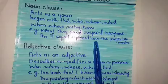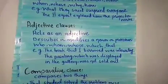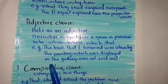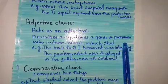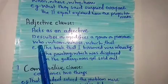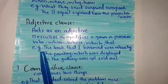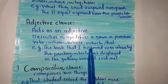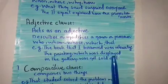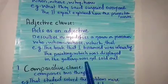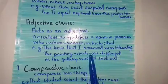Then we have the adjective clause. It acts as an adjective — it describes or modifies a noun or pronoun. An adjective clause includes the words: who, when, whose, which, and that. For example: 'The book that I borrowed was interesting.' And: 'The painting which was displayed in the gallery was not sold.' So 'that' and 'which' here are our adjective clauses because they are modifying a noun.